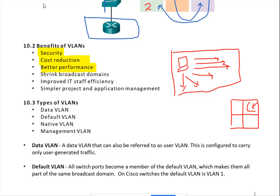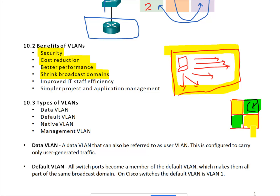Another benefit is shrinking the broadcast domain. With a thousand machines in a single broadcast domain, I can divide into four groups of 250, reducing the size of each broadcast domain. Additional benefits include improved IT staff efficiency - the administrator can easily control the network - and simpler project and application management. There are many benefits to creating virtual LANs.